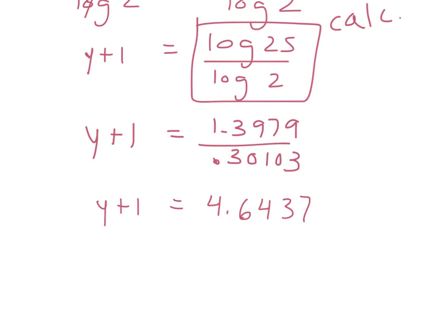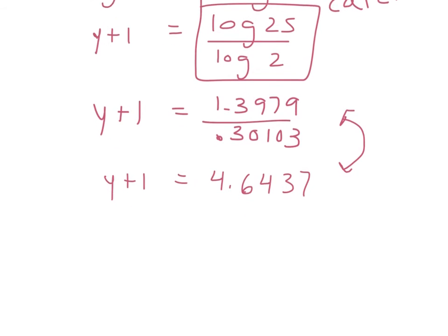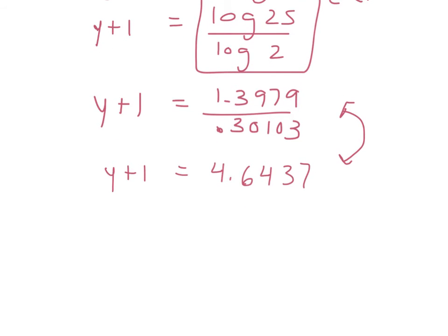It doesn't matter how many decimals you write here, but the more decimals you keep, the more exact your answer is going to be. Now our goal is to get y equals. Since 1 is being added to y, to get y all by itself, we're going to subtract 1 from both sides. It will cancel out on the left, so we get y equals 4.6437 minus 1, which becomes 3.64.